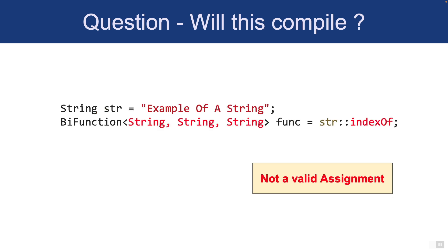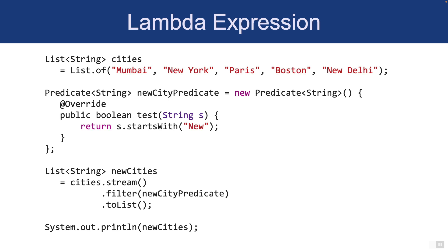Here's another example: there's an actual string object called 'example of a string', and indexOf of that string object is being assigned to the func BiFunction. This one is not going to compile. We will dissect method references and see what the difference is between the two — why one compiles and the other does not.